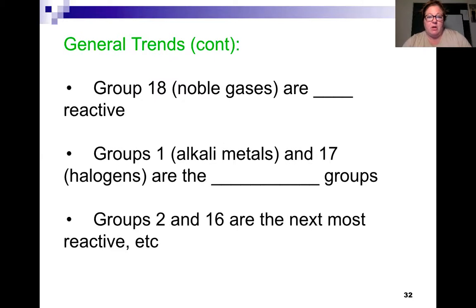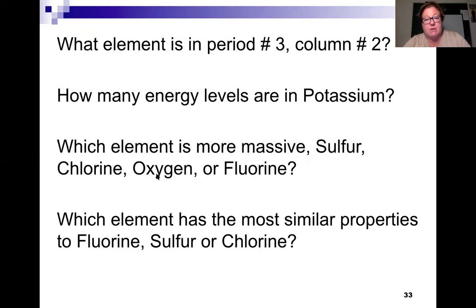Group 18 are the noble gases, and they are not reactive. They are chemically stable and do not have a reason to gain or lose electrons. Groups one and 17 are highly reactive, and groups two and 16 are the next most reactive.